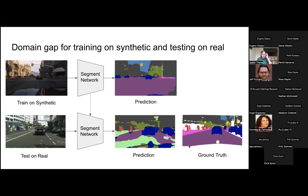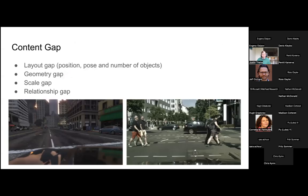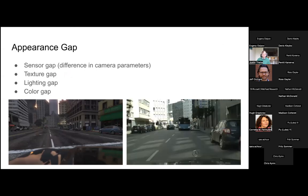Our team is interested in addressing what's known as the domain gap, which is typically measured as the difference in performance between training on synthetic data and evaluating on real data. You typically see a performance drop when applying a trained model to real data even if it performs well on synthetic data. We think about the domain gap in two ways: the content gap — differences in layout, position, pose, number of objects, geometry, scale and relationships — and the appearance gap — differences in sensor output, textures, lighting, and color.